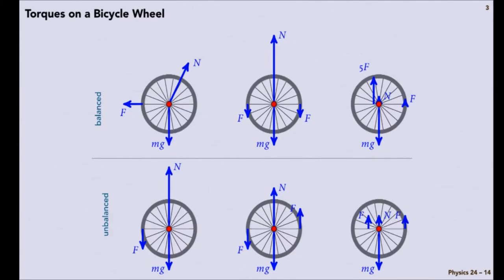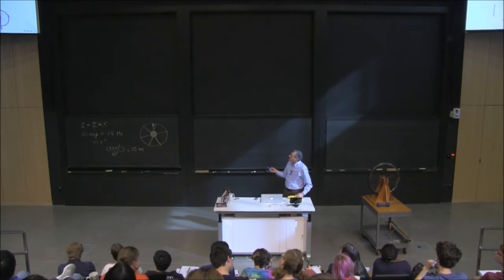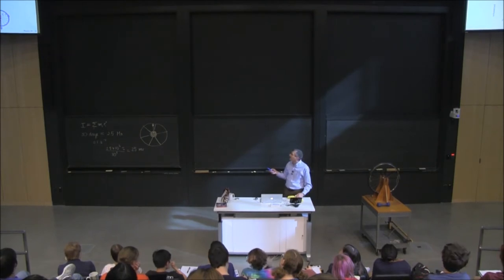So those three forces together, if I sum the force of the rubber band and the gravitational force, the sum of those two will be equal and opposite to the normal force. So that the net force on this wheel is zero.